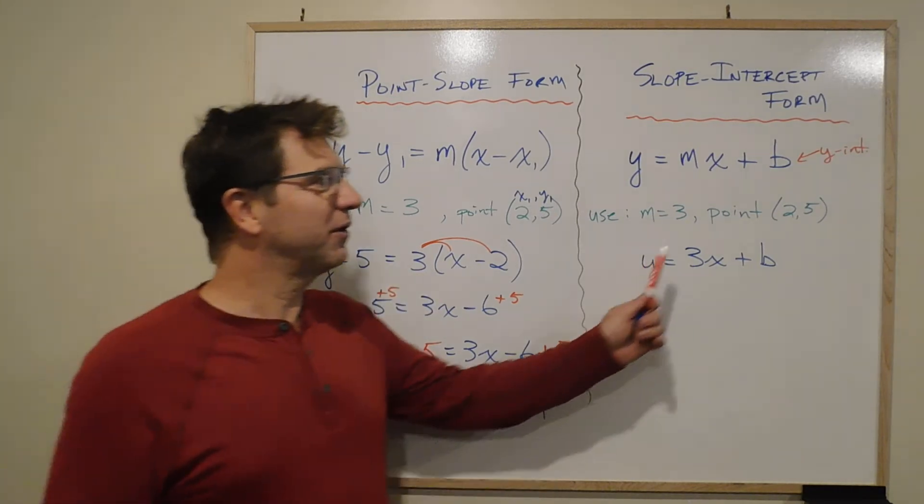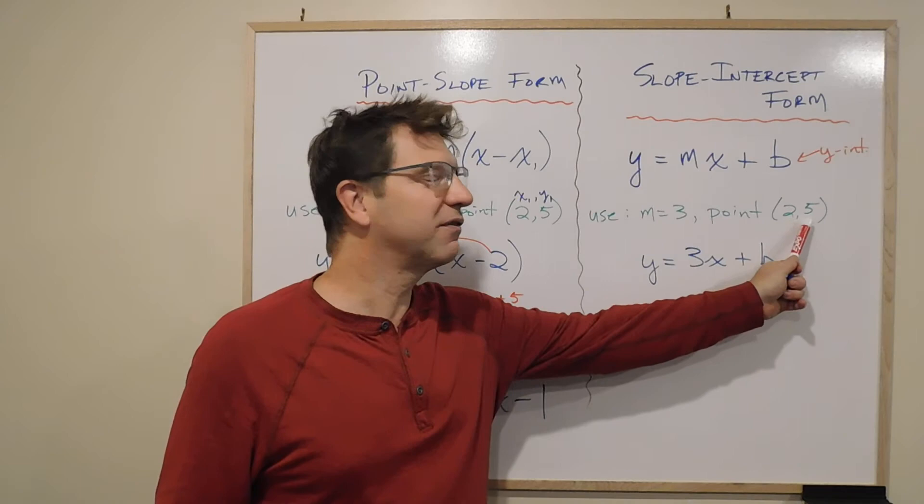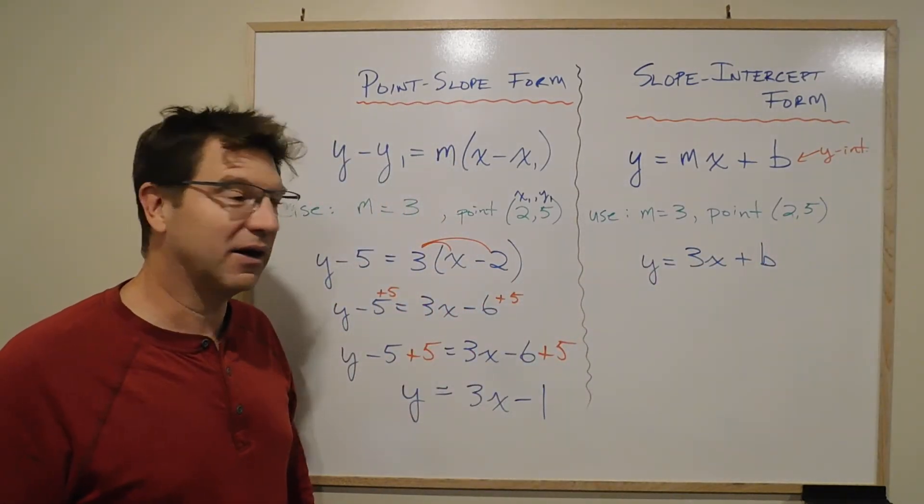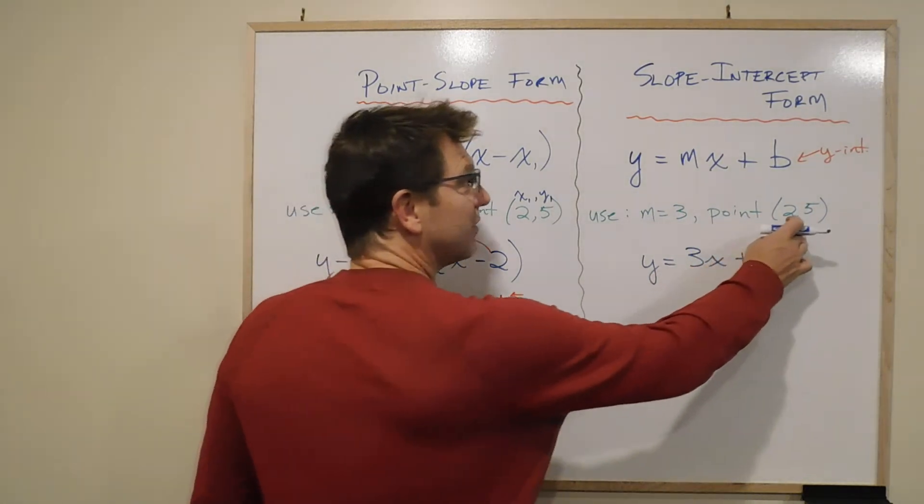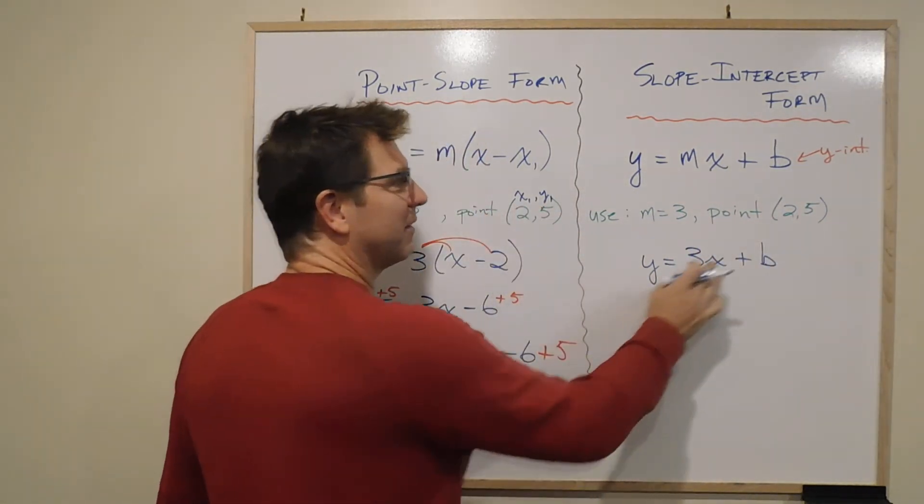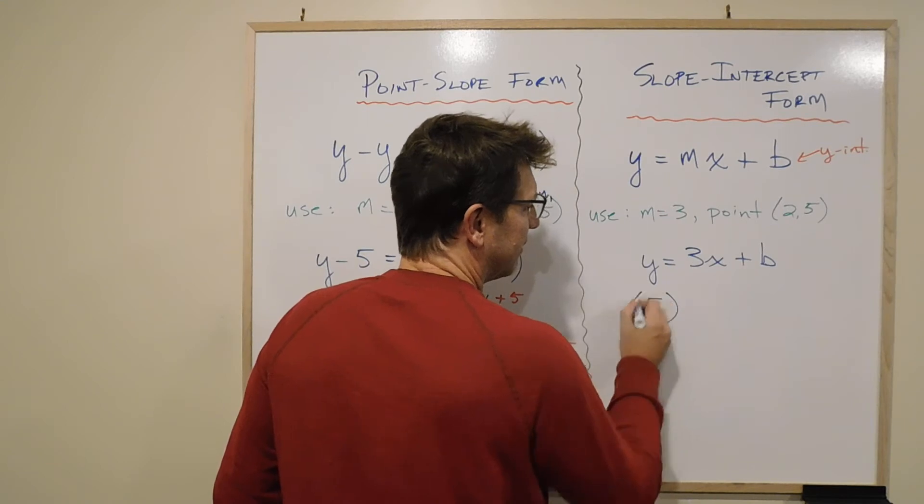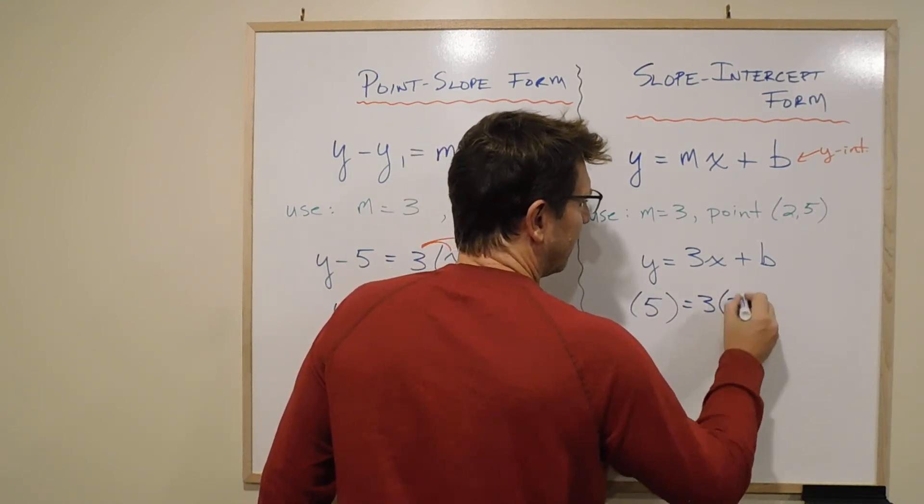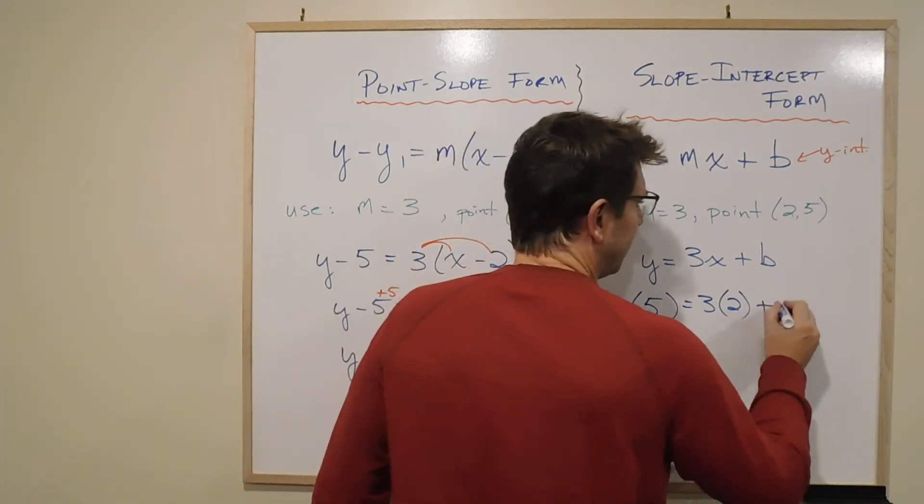So then what we do is we know this point is 2 and 5, and it gets put directly in to the x and y, right? So the y is 5, right? Same thing, x1, y1. So the y is 5, so we put a 5 in here. And 3 times a 2 in there, and plus b, right?